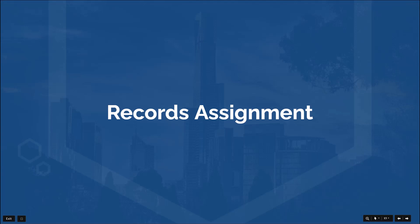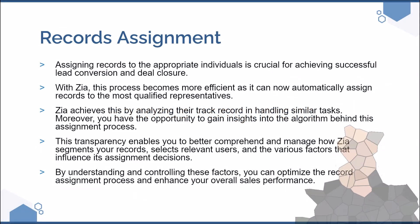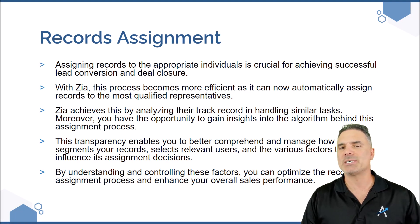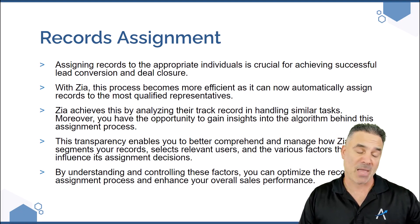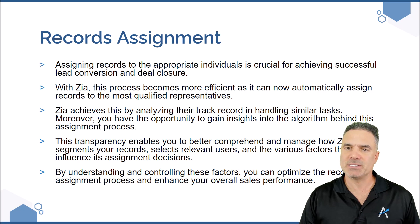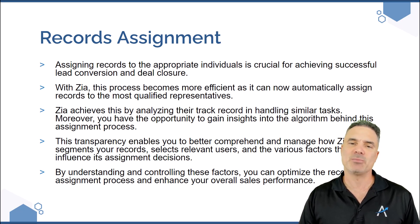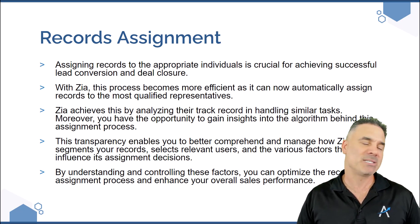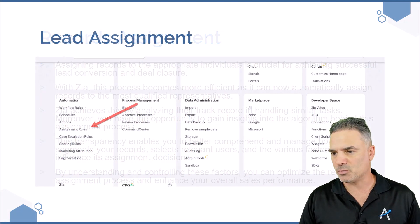Next, we are jumping to records assignment. Records assignments are usually done manually or using an assignment rule, which is round robin. When leads come in, it will assign them to the correct person based on logic set in advance. In this case, ZIA can do the assignment for you. So let's assume that someone wants laser hair removal as a service — ZIA will know which salesperson is the best fit to deal with that because they will have the most conversions, and ZIA will suggest the correct person based on availability and other factors.